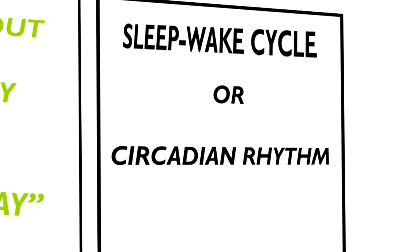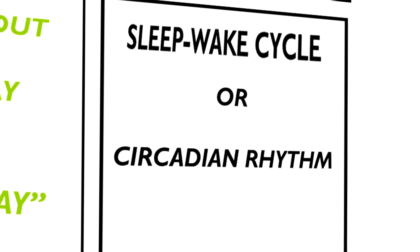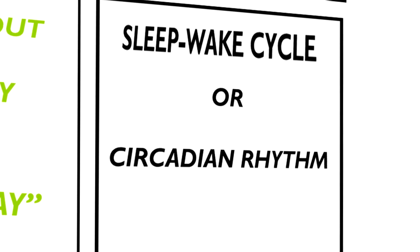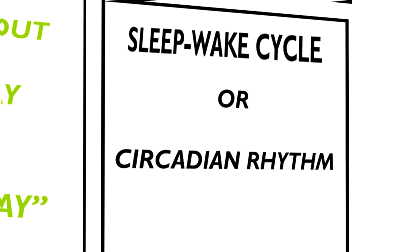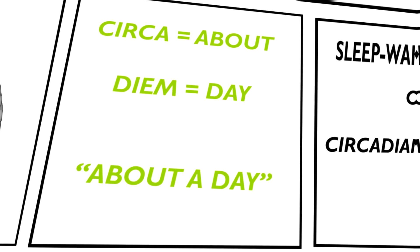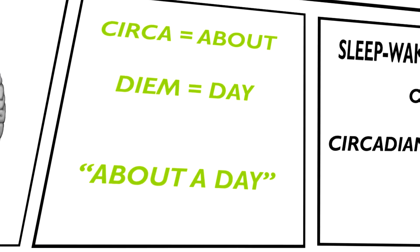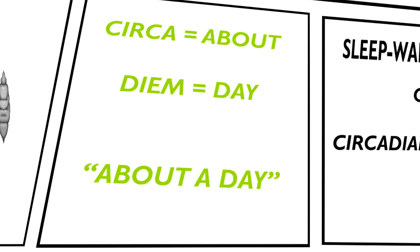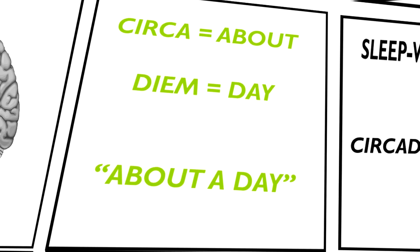The sleep-wake cycle is what we are interested in here, and it's called the circadian rhythm. It's made from two Latin words, because in neuroscience we are so passionate about deriving words from Latin and Greek language. The two words are circa, which means about, and diem, meaning day. So circadian rhythm takes about a day to complete.